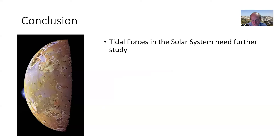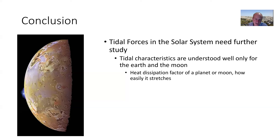Tidal forces in the solar system need further study. I wrote a paper on this, but it really needs more investigation — not a lot of people have looked at it closely. The tidal characteristics for Earth and the moon are well understood, but we need to know the heat dissipation factor — an indication of how easily a planet stretches — for most other planets and moons, and we just don't know that yet.